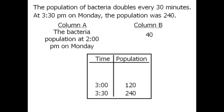Similarly at 2:30, the population would have been half the 3 o'clock population — in other words, 60. And finally at 2 o'clock, the population would have been half the 2:30 population, so the population at 2 would have been 30.